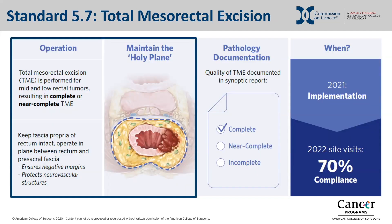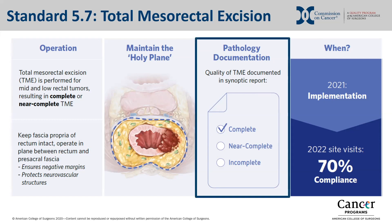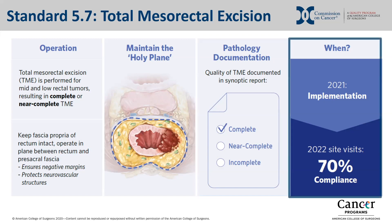To review: standard 5.7 requires that TME is performed for patients undergoing curative intent radical surgical resection of mid to low rectal tumors centered at or below the peritoneal reflection, dissecting in the correct plane and keeping the fascia propria of the rectum intact. Additionally, the TME should result in a complete or near complete total mesorectal excision. Pathology reports for resections of rectal adenocarcinoma must document the quality of the TME resection as complete, near complete, or incomplete in synoptic format. Implementation of this standard should start in 2021, as site visits in 2022 will assess for 70% compliance with the standard.